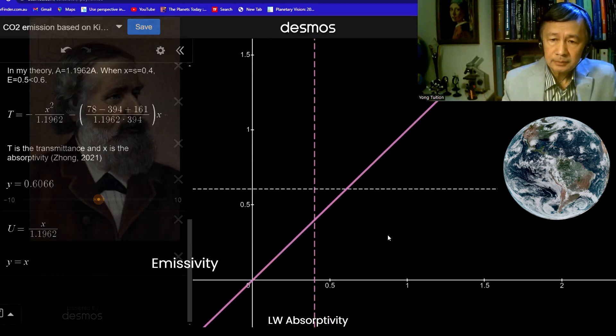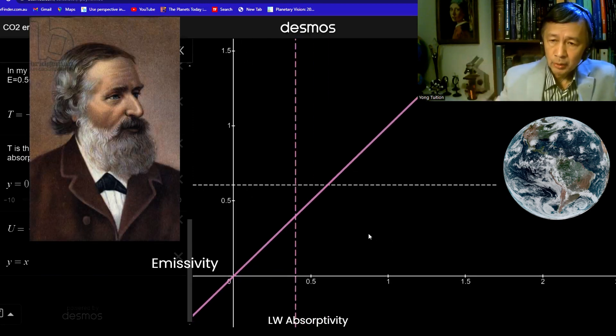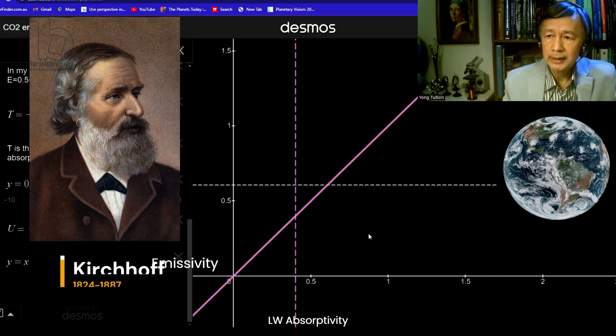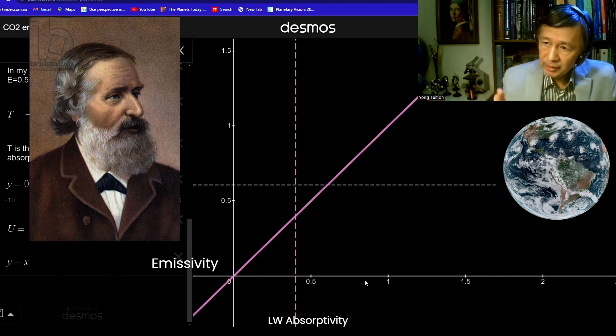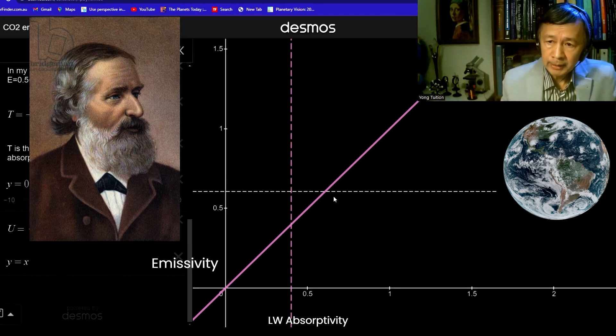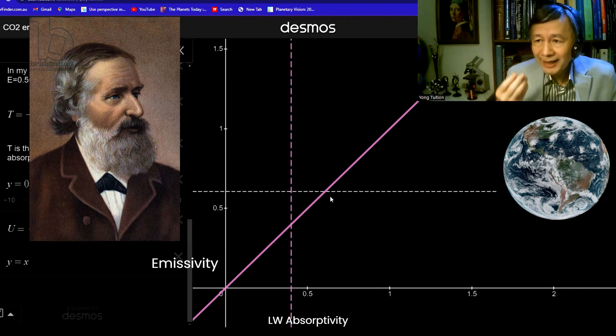Now, this red curve represents the upward atmospheric emissivity as a function of the longwave absorptivity. Absorptivity, you can treat it as a percentage of the radiation absorbed by the atmosphere from the surface. So remember, this red straight line only represents the dependence of the emissivity of black body on its absorptivity, which are equal according to Kirchhoff's law.